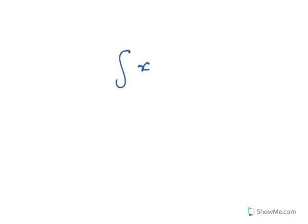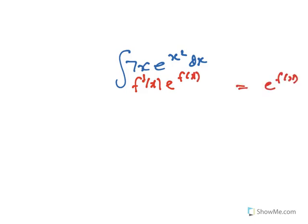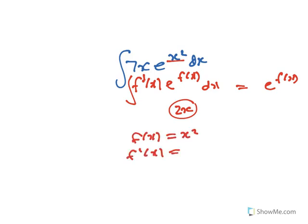Now further on that, so we have ∫7xe^(x^2)dx. Alright, so this should be your f'(x)e^(f(x)), and it's going to equal e^(f(x)) when you integrate it. So f'(x) is 2x, because f(x) equals x^2, f'(x) equals 2x.